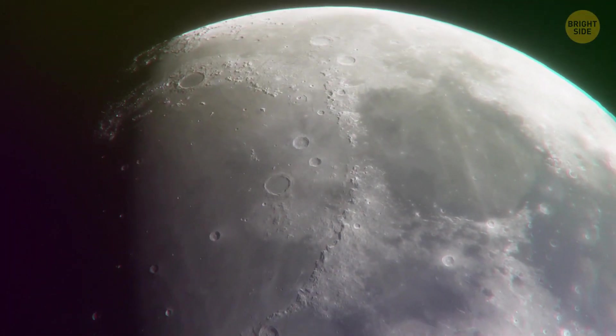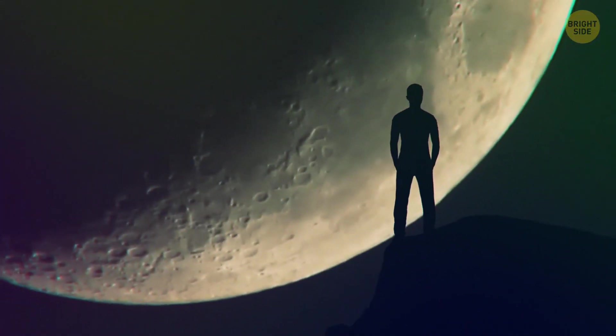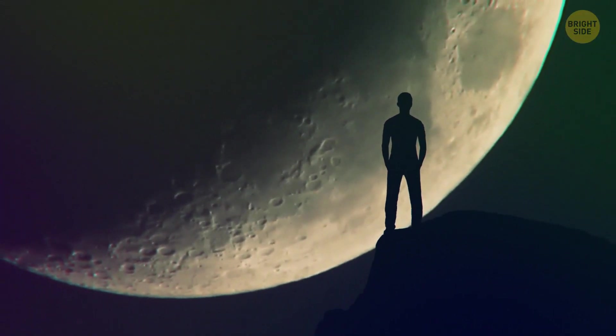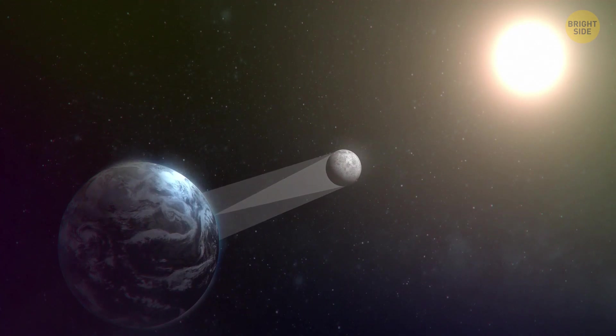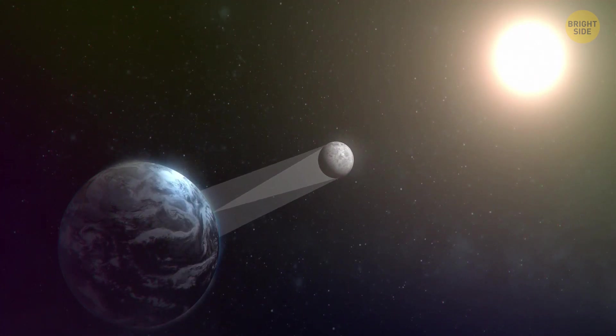We will always see the same side of the Moon, no matter where we are on Earth. The Moon rotates on its axis at the same speed it orbits the Earth. This is called synchronous rotation.